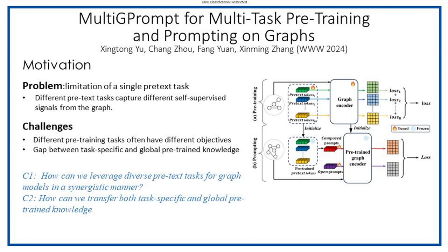However, there are two challenges to this problem. First, how can we leverage diverse pretext tasks for graph models in a synergistic manner? Second, how can we transfer both task-specific and global pre-trained knowledge?